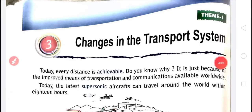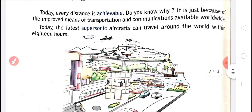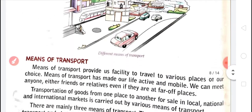Students, let's revise this lesson: changes in the transport system. We have learned about the transport system. There are three transport systems: land transport, water transport, and air transport. The transport system has made our life comfortable.